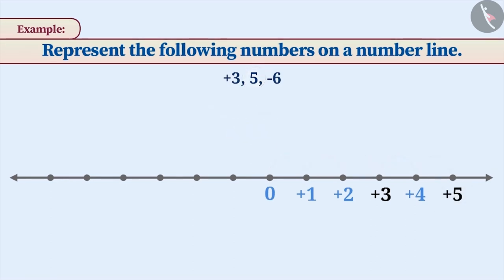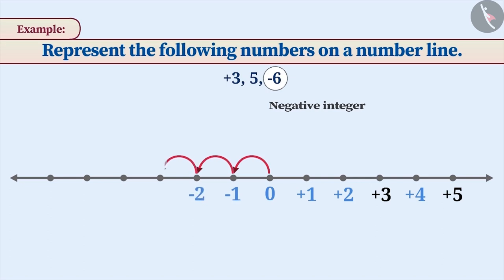The next number is minus 6, which is a negative integer. This is marked by moving 6 points to the left of 0. This is how we represent numbers on a number line.